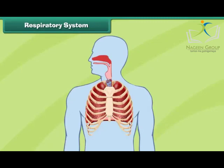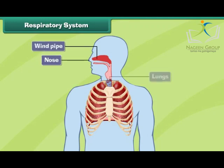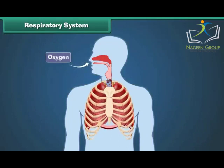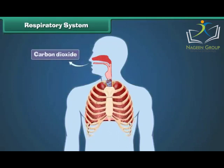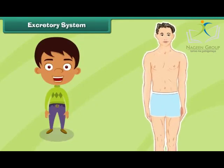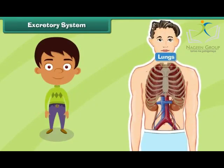The human respiratory system is made up of the nose, windpipe, and lungs. It helps in taking oxygen from the air and removing carbon dioxide from the human body. The oxygen mixes with food to give us energy.